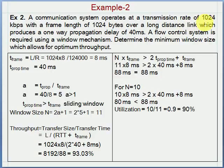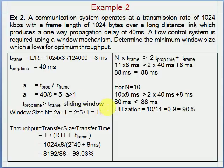In this example, bandwidth is 1024 kbps, frame length is 1024 bytes, and one-way propagation delay is 40 milliseconds. We need to suggest a flow control mechanism using the window mechanism and calculate minimum window size for optimum throughput. We calculate T-frame and T-prop is given. After calculating A, we get a value greater than 1, indicating the need for sliding window. We calculate sliding window size as 11. Throughput is calculated by dividing transfer size by transfer time, giving 93.3%.